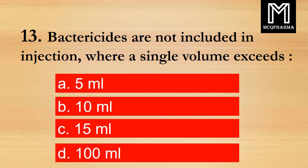Question number 13. Bactericides are not included in injections where a single volume exceeds? Option A: 5 ml. B: 10 ml. C: 15 ml. D: 100 ml. Correct answer: Option C, 15 ml.